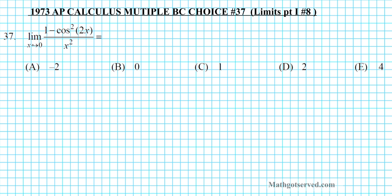So this is problem 37 where we find the limit as x approaches 0 of 1 minus cosine squared of 2x divided by x squared. So in order for us to find this limit there are two facts I want you to keep in mind.